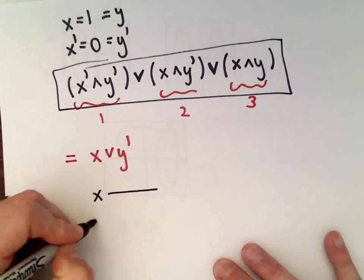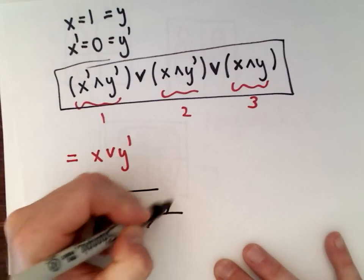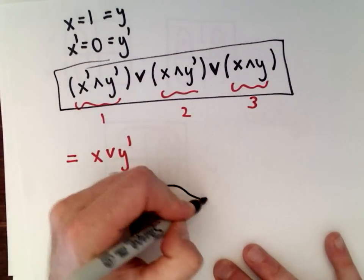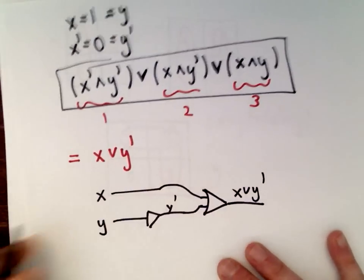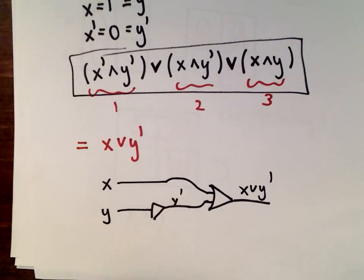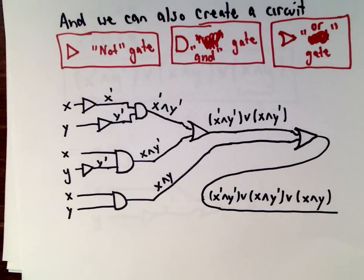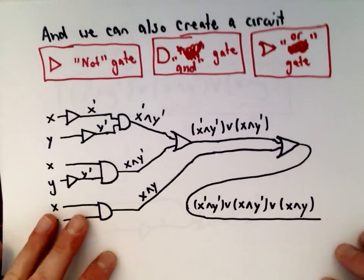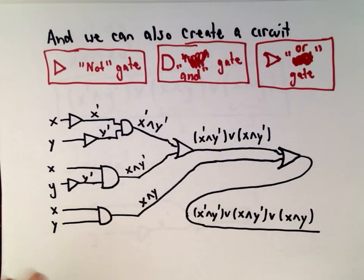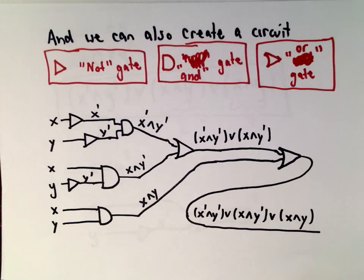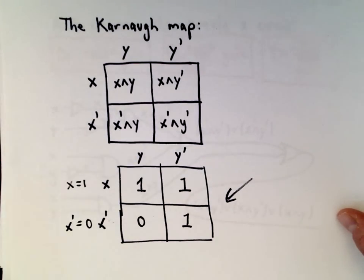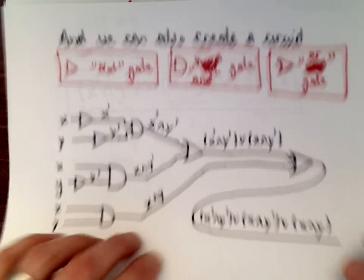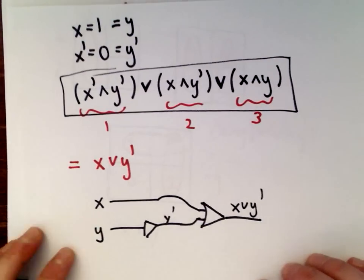This is the magic: we took the original boolean expression with three terms and simplified it to just x OR not-y. You can verify with a truth table that you get the same outputs. The new circuit is just: x comes in, y hits a NOT gate to become not-y, and they connect through an OR gate. This new circuit is much simpler than what we started with. The basic idea: everywhere there are 1s in your Karnaugh map, circle adjacent ones to find simplified boolean expressions, which simplifies your circuit.